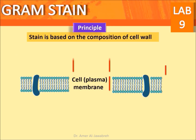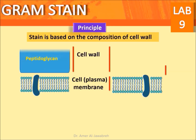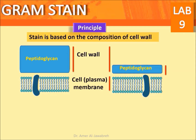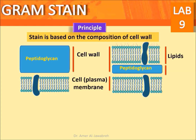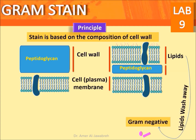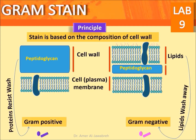Principle: The stain is based on the composition of the cell wall. Some bacteria have a thick cell wall composed mainly of peptidoglycan. Other bacteria have a thin peptidoglycan cell wall with a lipid bilayer. Lipids wash away, producing gram-negative bacteria. Proteins resist the wash, producing gram-positive bacteria.